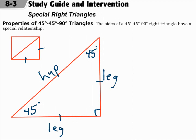This is lesson 8.3 Special Right Triangles. Your objectives are to use the properties of 45-45-90 triangles and to use the properties of 30-60-90 triangles.